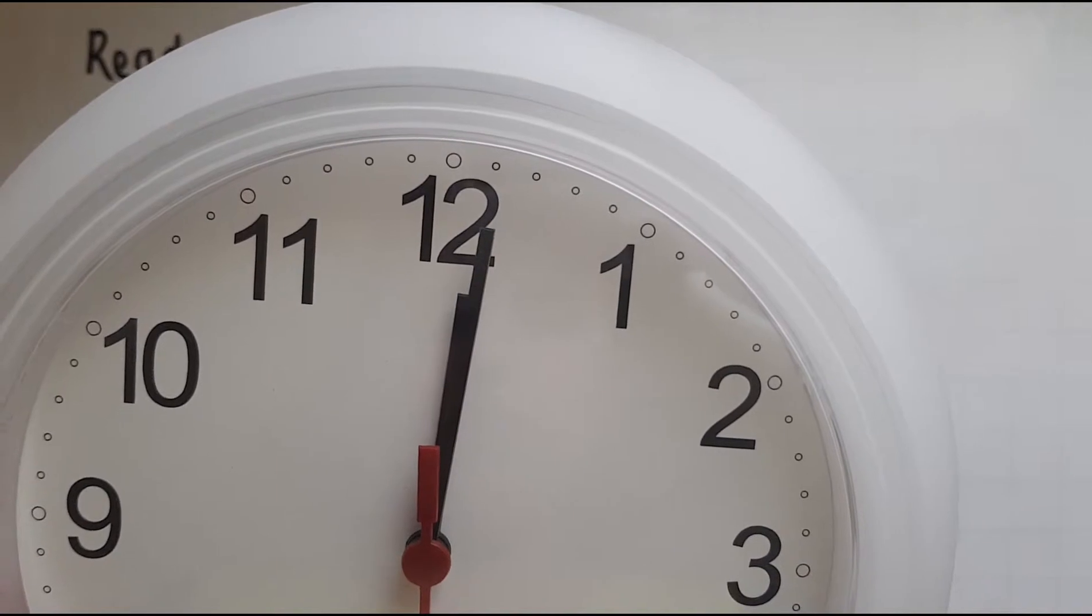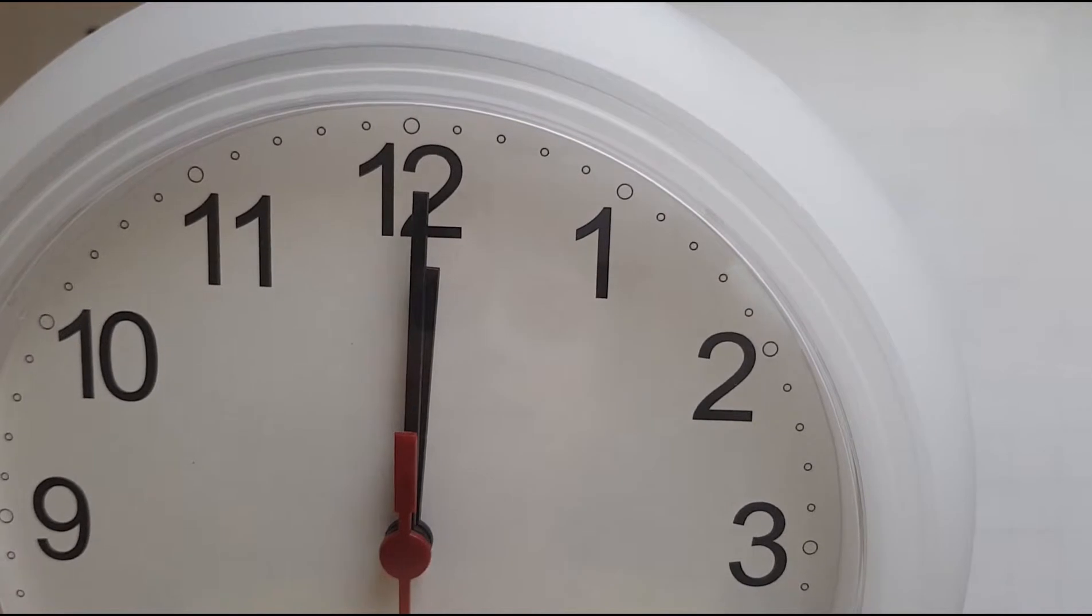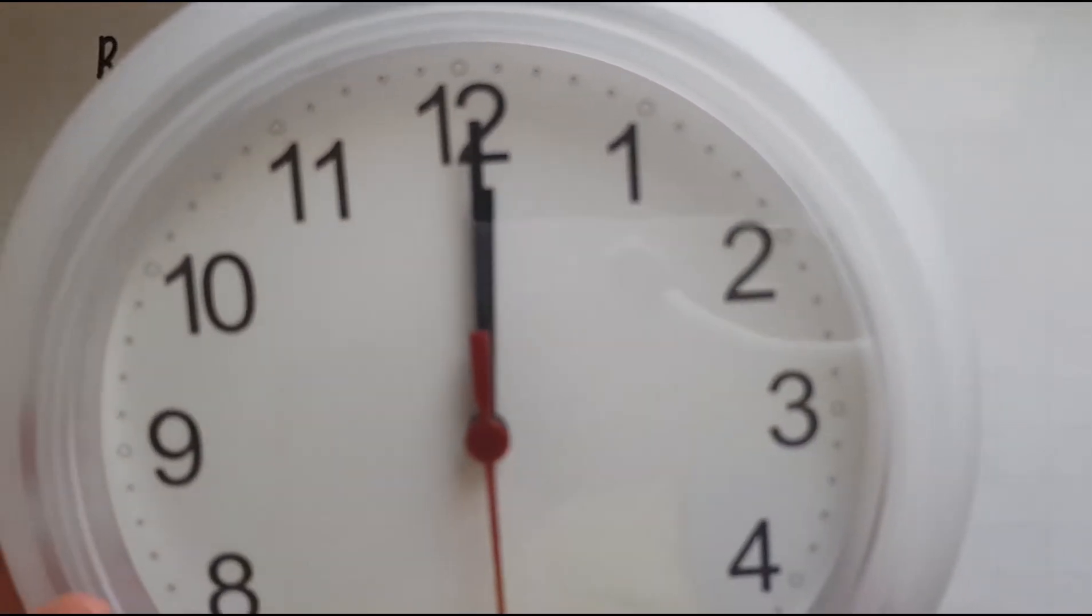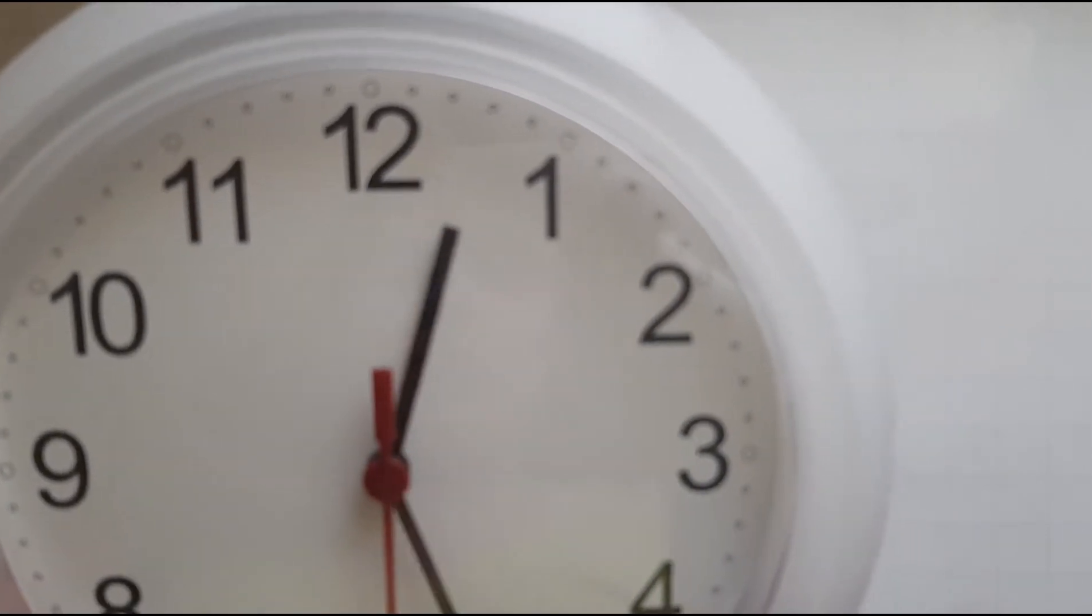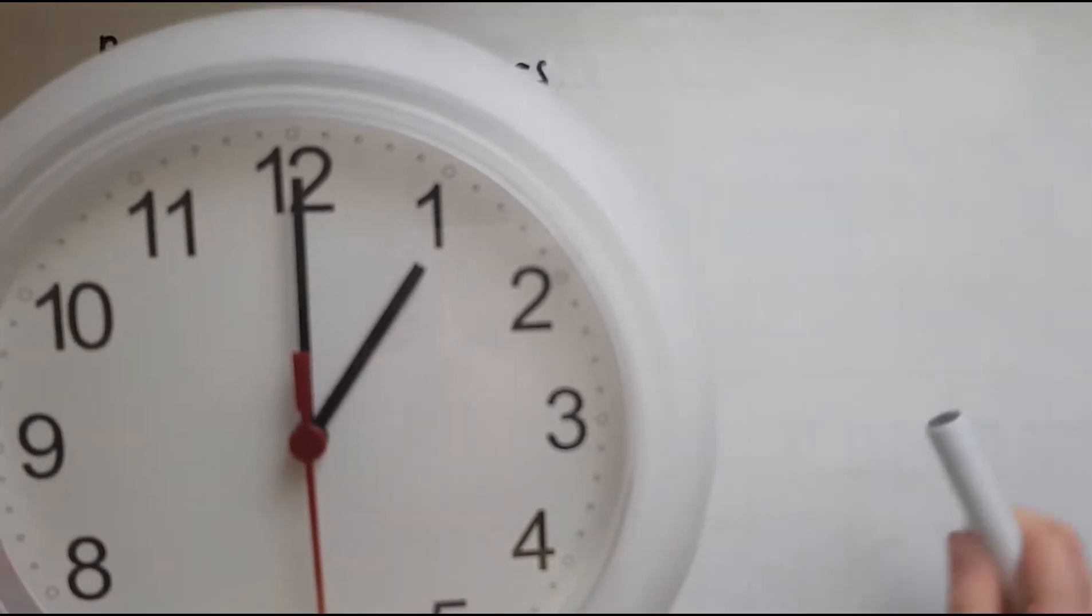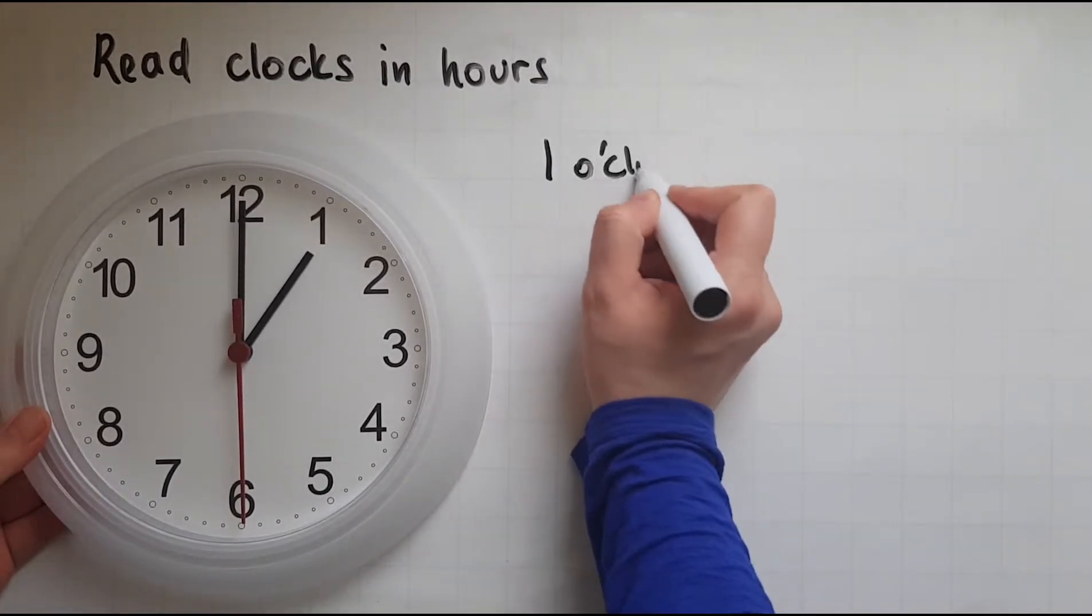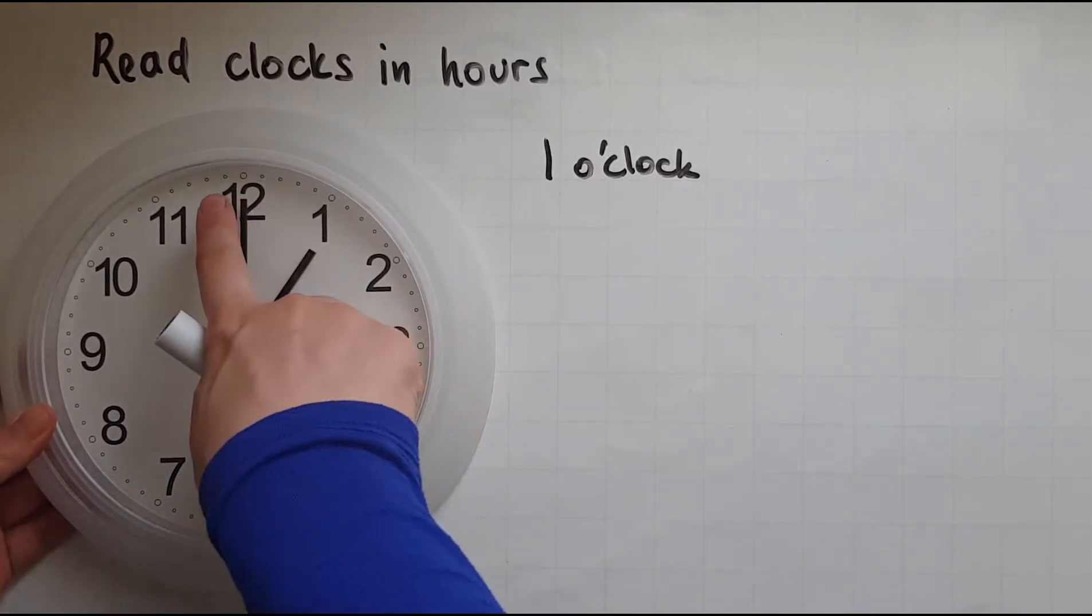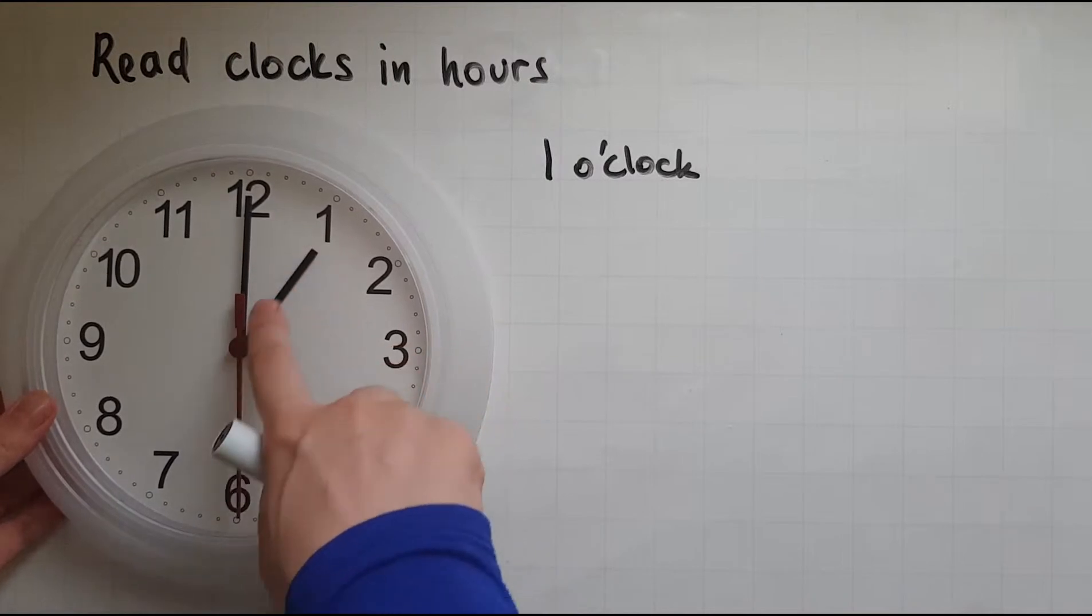When the minutes hand is on 12, it means there are zero minutes. At this moment the time is 12 o'clock. We'll take them in turn. I will move to one, and that shows the time is now one o'clock. The hours hand is on one